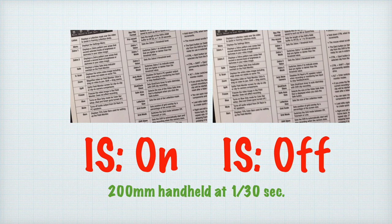Larger apertures let you use faster shutter speeds to help freeze motion, while smaller apertures may require a tripod to avoid camera shake. Some lenses have image stabilization or vibration compensation to help steady the camera, but neither a tripod nor IS will help freeze subject movement. More and more cameras are offering in-body stabilization, but that too only helps prevent camera shake with no effect on subject movement.